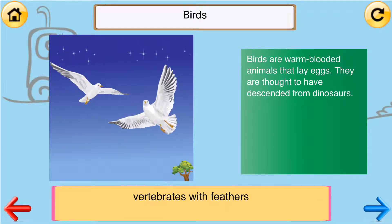Birds. Vertebrates with feathers. Birds are warm-blooded animals that lay eggs. They are thought to have descended from dinosaurs.